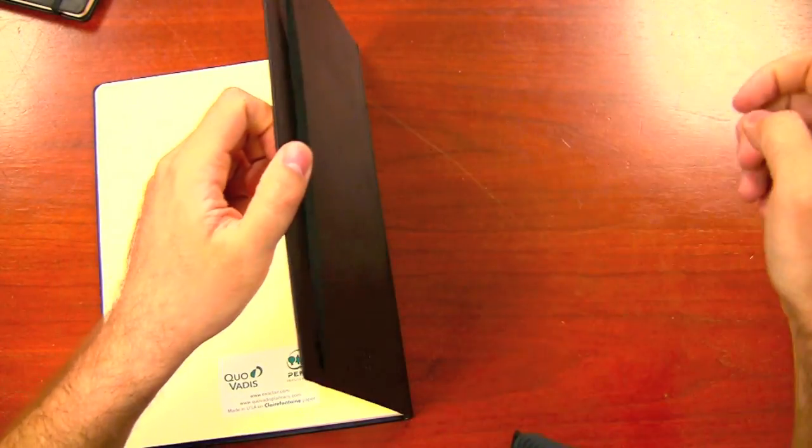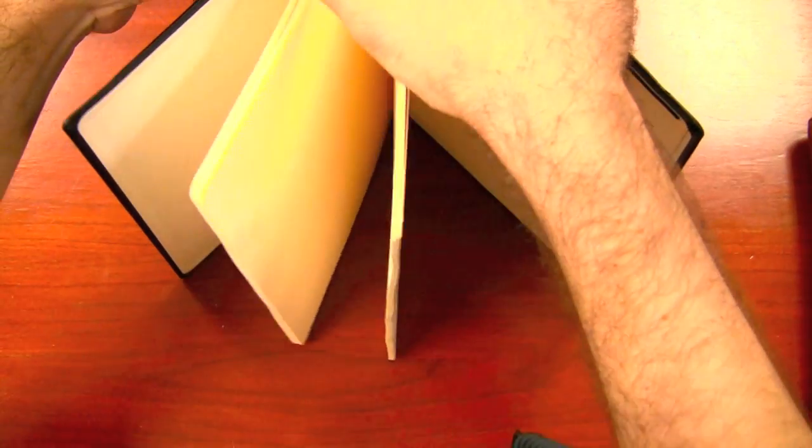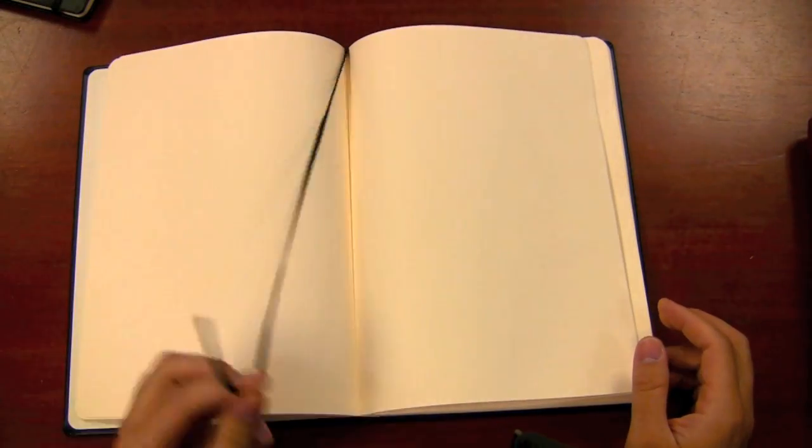It's got an elastic enclosure here, and it does have a ribbon marker, which I'm having a hard time finding right at the moment. There we go. So, a lot of nice features to it.